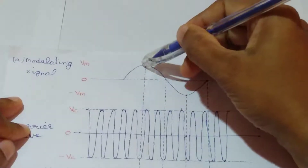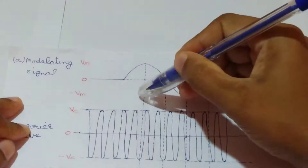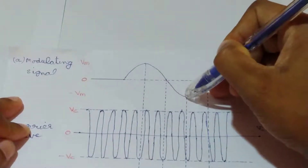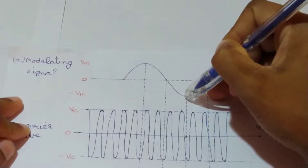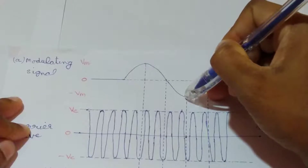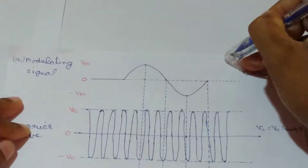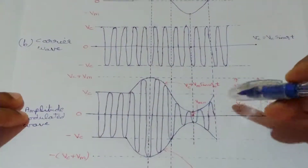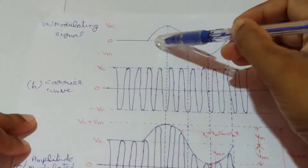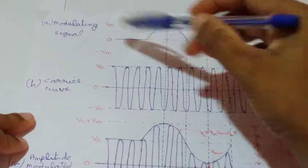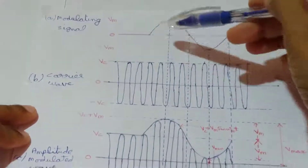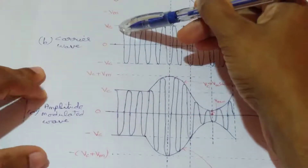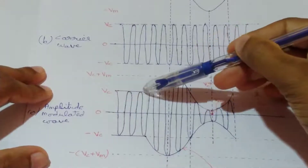When the amplitude of the modulating signal reaches its peak value Vm, the amplitude of the amplitude modulated wave will be at Vc plus Vm — because the zero level corresponds to Vc, and the signal has increased by Vm. When the modulating signal goes on decreasing, the amplitude of the AM wave also decreases. When the modulating signal reaches minus Vm, the amplitude of the AM wave will be at Vc minus Vm. So the zero level of the modulating signal is represented by Vc, and the amplitude modulated wave is at Vc amplitude up to the point where the modulating signal is applied.